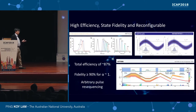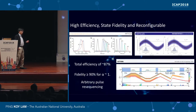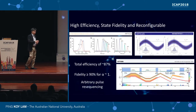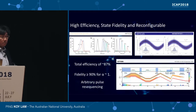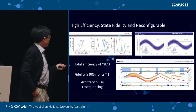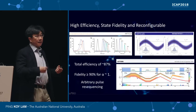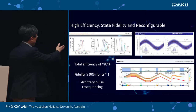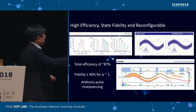We have used the gradient echo memory to implement quite a number of schemes. We've demonstrated that the total efficiency from input to output can approach 90%. We have used it to store quantum information, and for a light state with alpha approximately one — near the single photon state — we can have a quantum fidelity of larger than 90%. And because of the polaritonic nature of our memory, you can put in seven pulses of light and arbitrarily resequence the output, for example getting them out in order four, three, five, six, two, one.